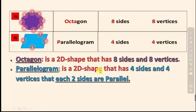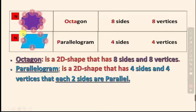The parallelogram is a 2D shape with four sides and four vertices, but each pair of opposite sides is parallel — meaning side one is parallel to side three, and side two is parallel to side four. Parallel sides move in the same direction and will never intersect. That is why it is called a parallelogram.